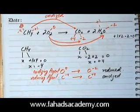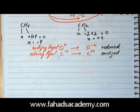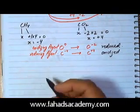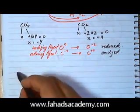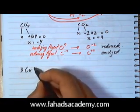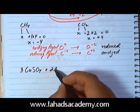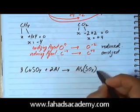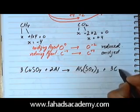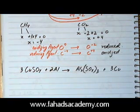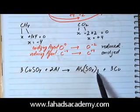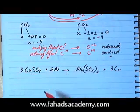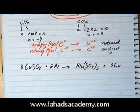Now we're going to move on to a slightly more complicated equation. In the previous examples we didn't really need oxidation states, but in the next equations you'll need to actually calculate them. We have 3CuSO₄ reacting with aluminium, producing Al₂(SO₄)₃ and three copper atoms. This is a displacement reaction because aluminium is more reactive than copper, so it displaces copper from its solution.